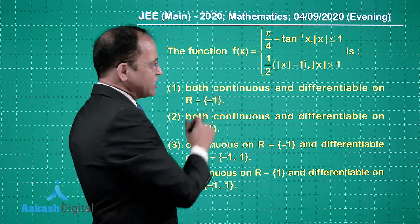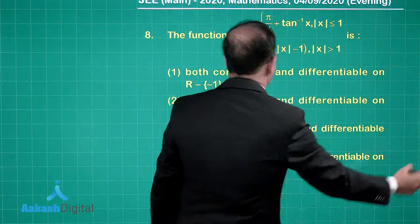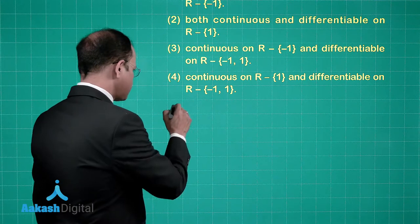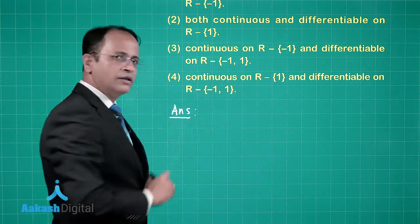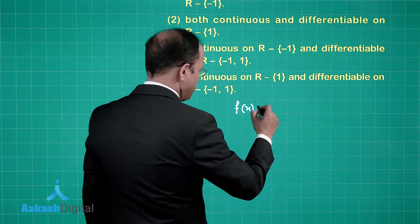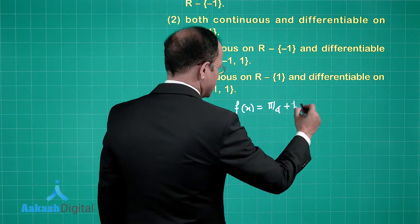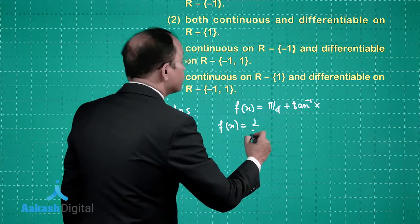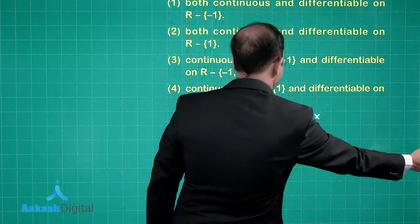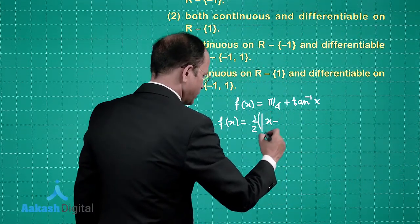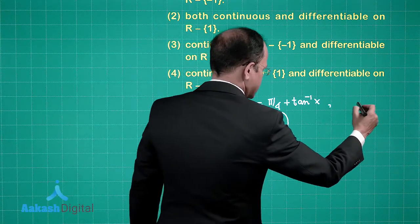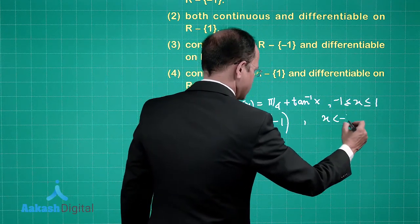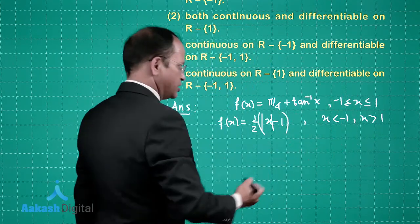It is advisable to use a graph here so that things become easy for us. f(x) is equal to pi/4 plus tan inverse x. Also, f(x) is equal to half of mod of x minus 1, and this is for x greater than or equal to minus 1 and less than or equal to 1, while for x less than minus 1 and x greater than 1 the other piece applies. These are the domains we have been given.